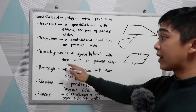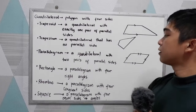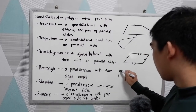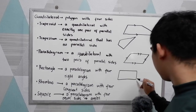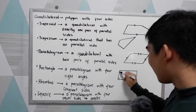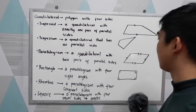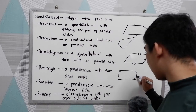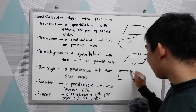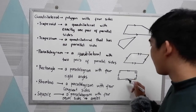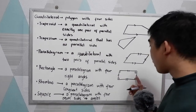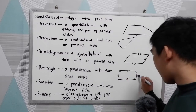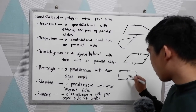Rectangle — it is a parallelogram with four right angles. So all four angles are 90 degrees. We're going to draw a rectangle: 90, 90, 90, and 90. And it is a parallelogram, so this side is parallel to this one, and this side is parallel to the other. Of course, in a rectangle, opposite sides are equal — this side equals the measure of the other side.